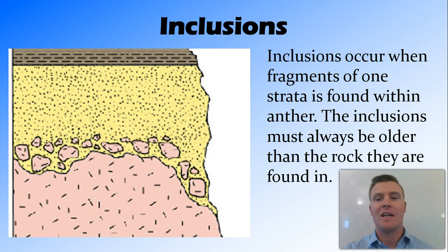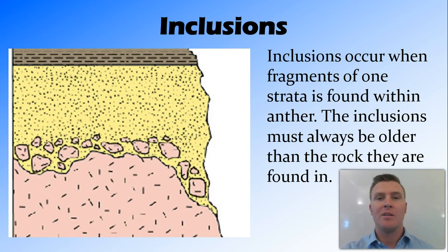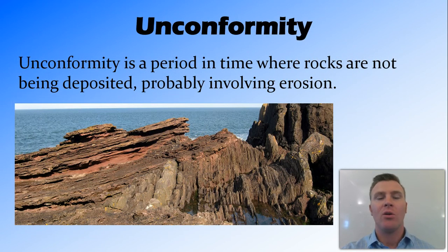An inclusion occurs when fragments of one strata are found inside another strata. For inclusions to be present, they must have formed before the strata in which they are found. Here we have a pink strata at the bottom and a yellow strata on top, with inclusions of the pink strata inside the yellow. This tells us the pink strata formed first, weathering broke off fragments, and then the yellow strata formed afterwards incorporating those fragments.